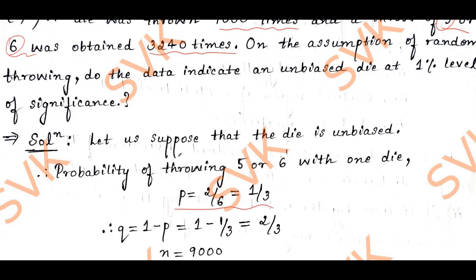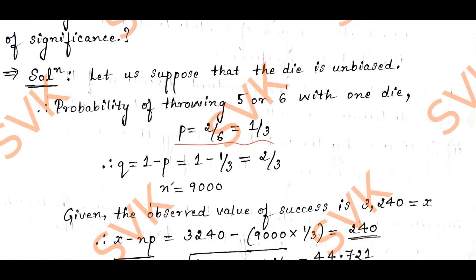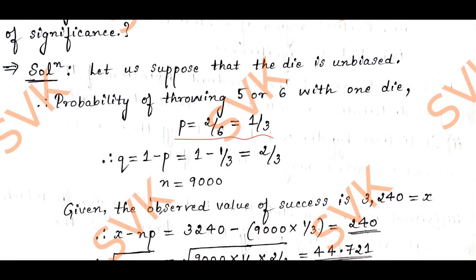The probability of success: x value is 3,240 and n value is 9,000. On the assumption of random throwing, we consider normal variant z equal to (x minus np) divided by square root of npq. By finding that, we can get the solution.